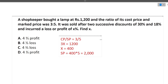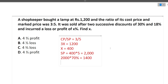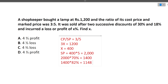But this is the market selling price. We are giving two successive discounts of 30% and 18%. After a 30% discount, 70% remains, giving Rs. 1400. Then applying an 18% discount on 1400, 82% remains, giving Rs. 1148.